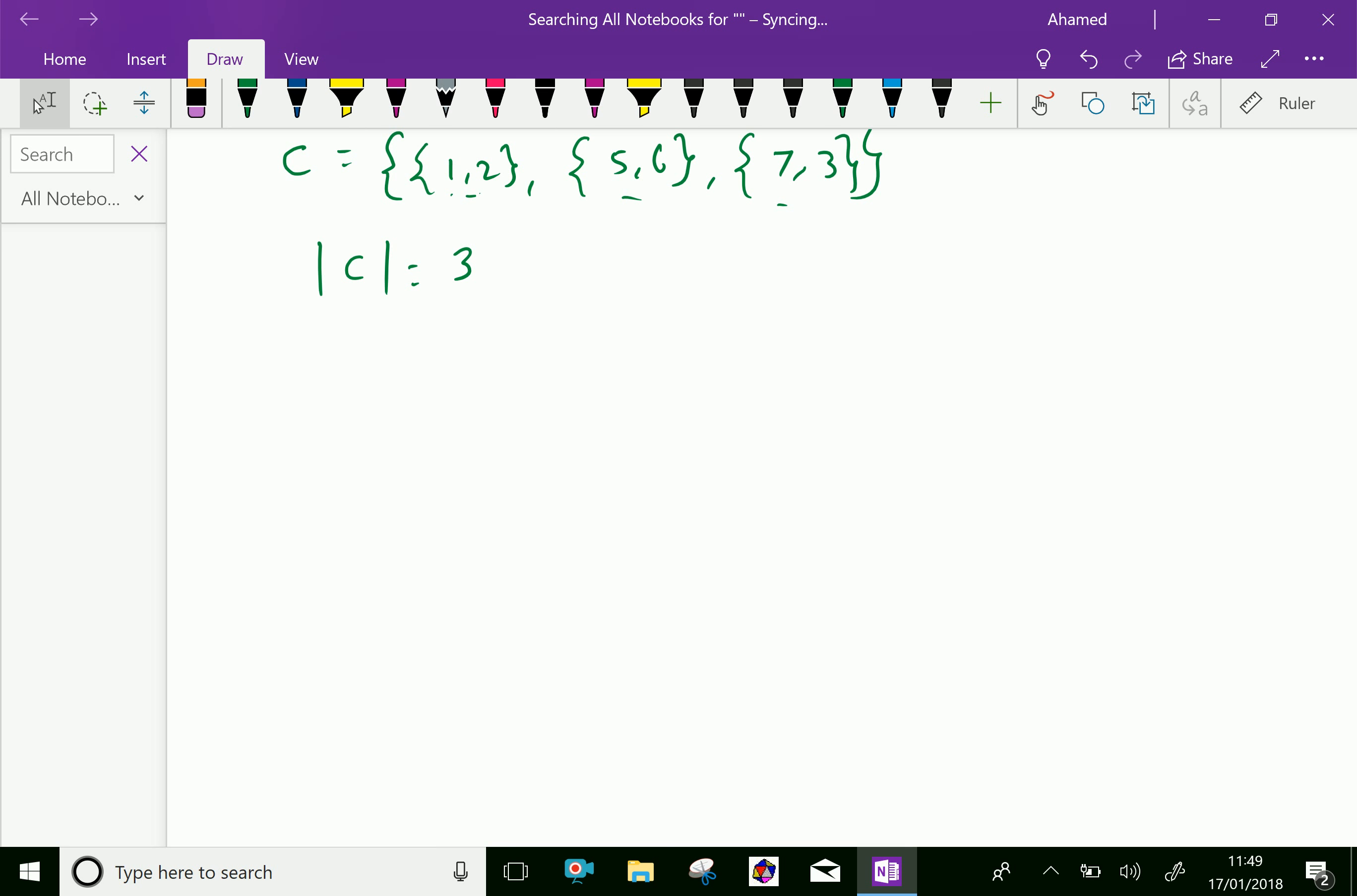Suppose set D equals the null set. The cardinality of D is 0, because there are no elements in set D. Since D is the null set, its cardinality is 0.